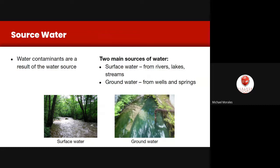Surface water comes from rivers, lakes, ponds, and streams. Groundwater comes from wells and springs. They each have different types of traditional contaminants.